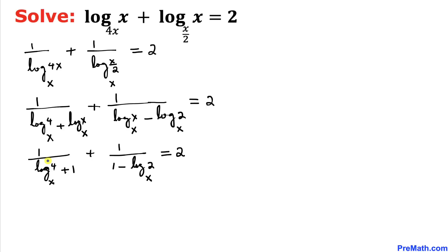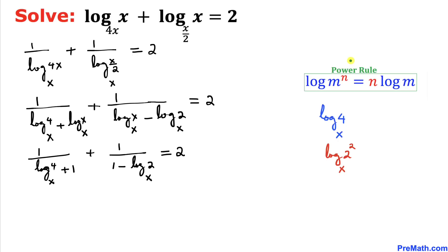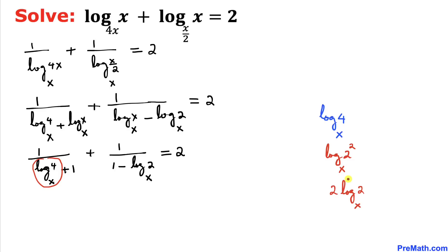Now let's focus on log of 4 with base x. Since 4 equals 2², we write log of 2² with base x. Using the power rule, the exponent moves to the front, giving 2 times log of 2 with base x. Substituting back, we get 1 divided by (2·log_x(2) plus 1), plus 1 divided by (1 minus log_x(2)), equals 2.